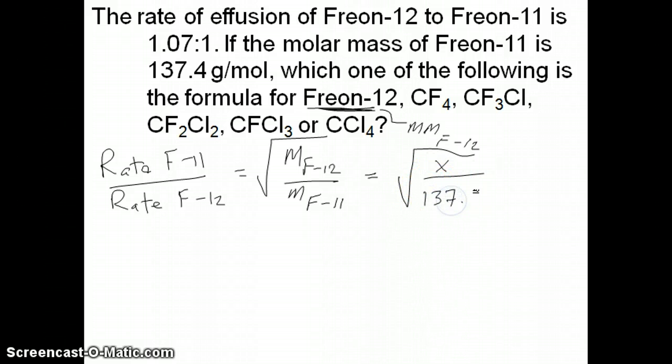Then we got molar mass of Freon 11, which is 137.4 grams per mole, equal to the ratio here. Now the ratio here that is shown is 1.07 to 1, that's for 12 to 11. We wrote it in such a way that it's 11 to 12, so I have to invert that ratio, so it will just be 1 to 1.07.